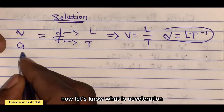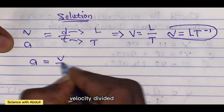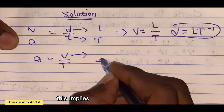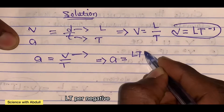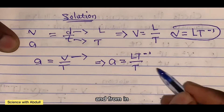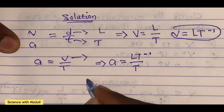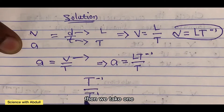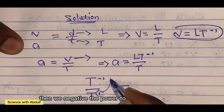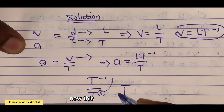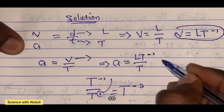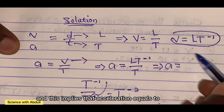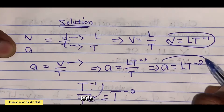Now let's find acceleration. Acceleration is defined as velocity divided by time taken, and we already know velocity as L T to the power of negative 1. So substituting, acceleration equals L T to the power of negative 1 divided by T. From the index law, T to the power of negative 1 divided by T gives T to the power of negative 2. So acceleration equals L T to the power of negative 2. Let's keep this in mind.